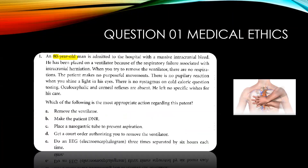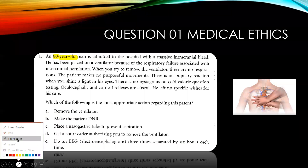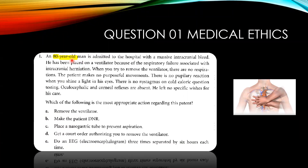So this is question number one. As we can see — let me take a pointer for you all. An 80-year-old man is admitted to the hospital with a massive intracranial bleed. An elderly person can have a stroke or some other cause — they didn't mention that. So let's say the elderly person is having some kind of stroke, maybe an intracranial bleed, and he has been placed on a ventilator because of respiratory failure associated with intracranial herniation.